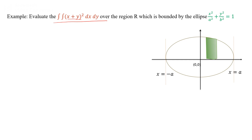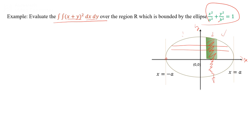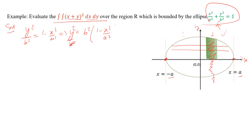One more example: evaluate the double integration of (x plus y) whole square dx dy over the region bounded by an ellipse. Taking the strip along the y-axis, the strip varies from the lower to the upper bound. The x range is minus a to a. Solving the ellipse equation for y: y squared by b squared equals 1 minus x squared by a squared, giving y equal to plus or minus b times root(1 minus x squared upon a squared).